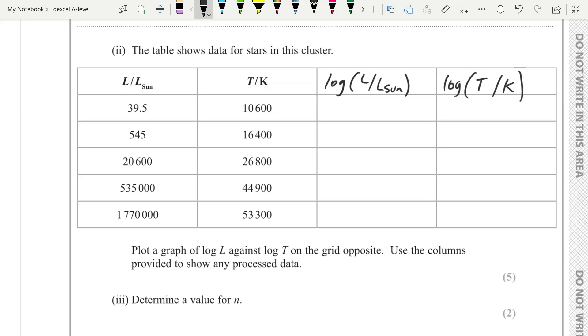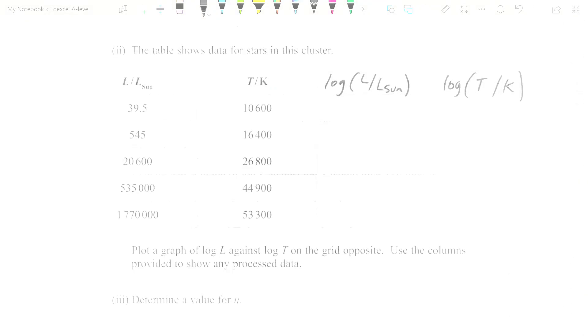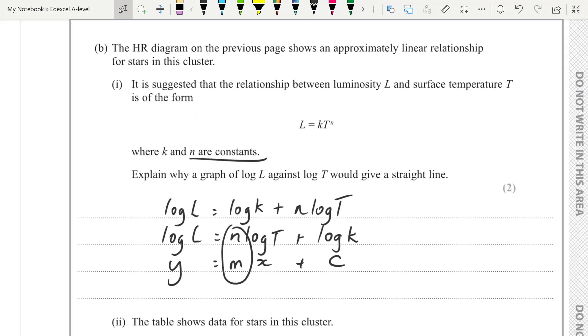These questions usually go on to get you to find a value for the gradient so that you can relate that back to the equation. Let's have a look back at the equation. It says determine a value for n. We know n is going to be the gradient here. They could equally ask you to determine a value for k, at which point you find the intercept on the graph and then anti-log that to get a value for k. Or I've seen questions where they ask you to then write the mathematical relationship. In other words, you're replacing k and n in this equation with the actual numbers. If you look back through the past papers you will see it is always a log relationship and they're all tackled the same way.